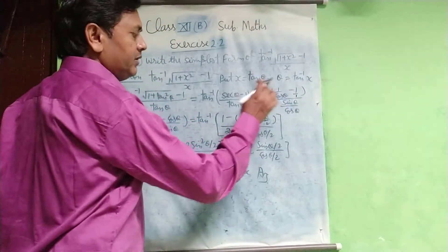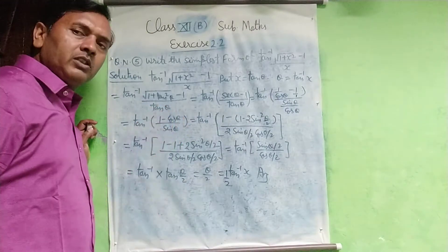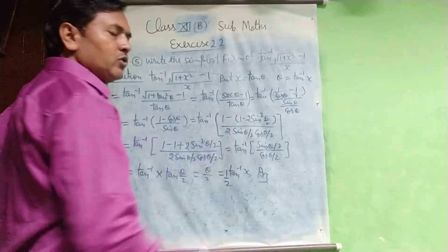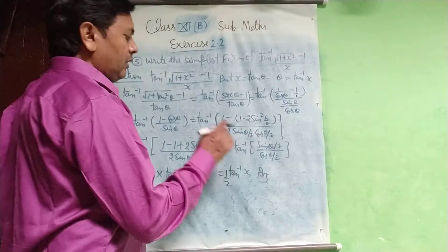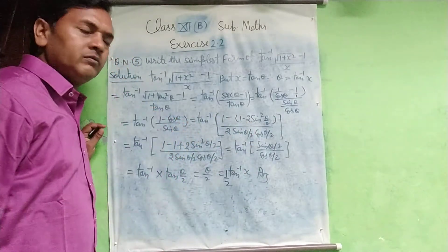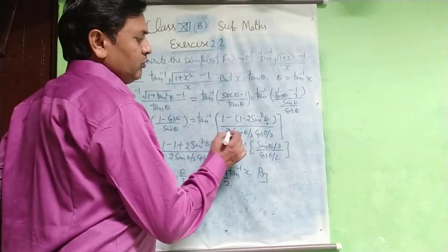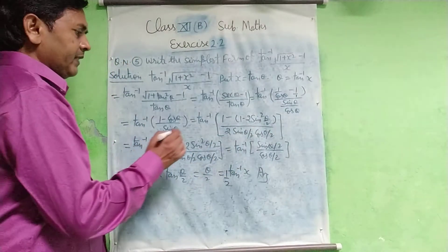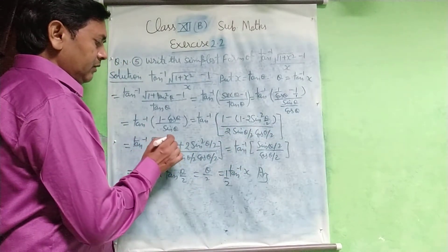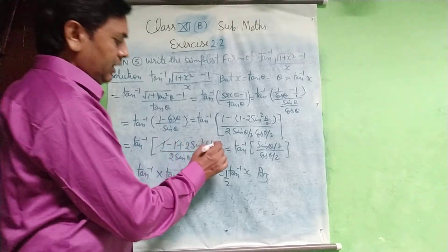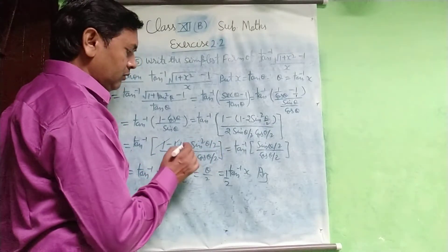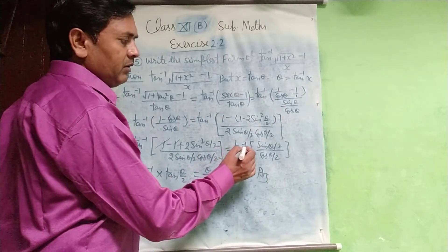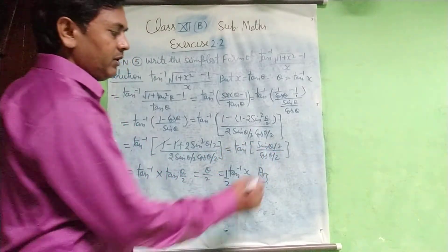We get tan⁻¹[(1 - cosθ)/sinθ]. Applying the half-angle formula: 1 - cosθ = 2sin²(θ/2), and sinθ = 2sin(θ/2)cos(θ/2). So the 2s cancel and sin(θ/2) cancels, giving tan⁻¹[sin(θ/2)/cos(θ/2)], which equals tan⁻¹(tan(θ/2)).